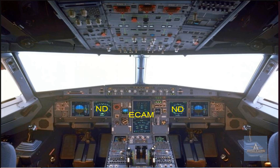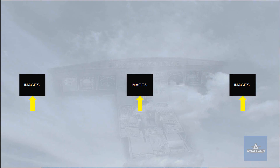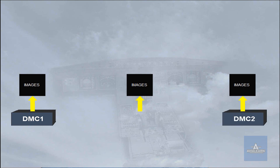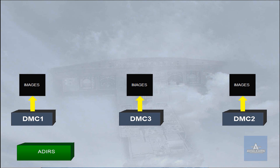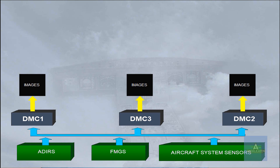First, let's compare the A320 EIS architecture with that of the Long Range. Like on the Long Range, there are three identical display management computers implemented on the A320. These process data from the ADERS, the FMGS and system sensors, and generate the images to be displayed.